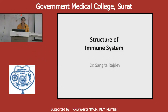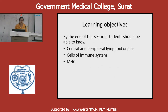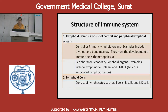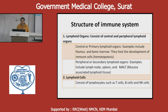This topic is the structure of the immune system. You need to understand the central and peripheral lymphoid organs, cells of immune system, and MHC. Lymphoid organs are mainly divided into two parts: central and peripheral. Central lymphoid organs are the thymus and bone marrow where hematopoiesis takes place. Peripheral or secondary lymph organs are the lymph nodes, spleen, MALT, and other lymphoid cells that together constitute the immune system.